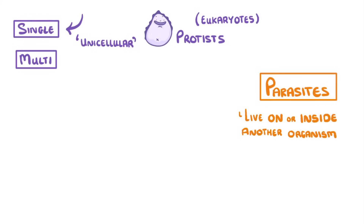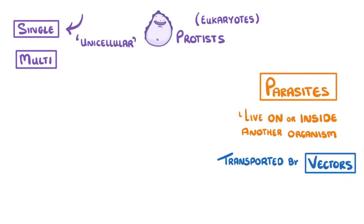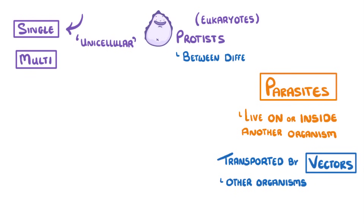Protists are often transported by vectors, which are other organisms like insects that transport the protists between different host organisms. Importantly though, the vectors don't get the disease themselves.